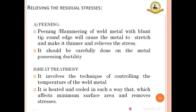Peening, also known as hammering of the weld metal, involves striking the metal with a blunt, stiff, round-edged hammer, which causes the metal to stretch, become thinner, and relieve stresses. Care should be taken that peening is performed only on metals that possess ductility; otherwise, the weld may break. The next method is heat treatment, which involves controlling the temperature of the weld metal by heating and cooling it in a controlled manner to minimize affected surface area and remove stresses.